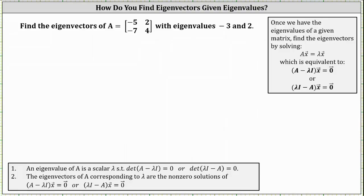In the previous lesson we found the eigenvalues of matrix A to be negative three and positive two. Once we have the eigenvalues of a given matrix we can find the eigenvectors by solving the eigenvector equation, which is equivalent to either of the equations shown below. We will use this first form where we have the difference of matrix A and lambda times the identity matrix times vector x equals the zero vector, where x is an eigenvector.